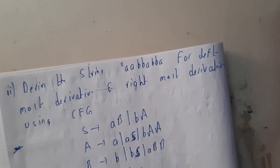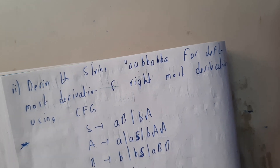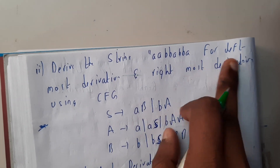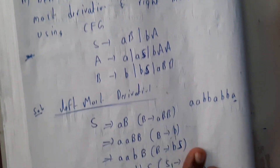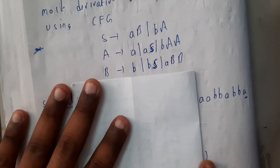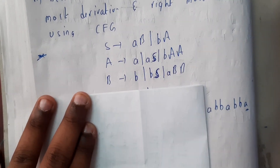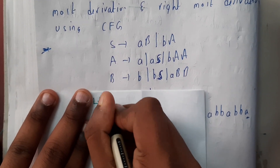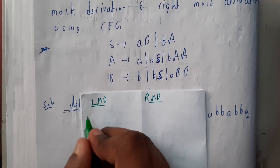Now let us continue to the next question, which is a bit bigger compared to the first, but the process is exactly the same. Derive the string 'aabbabba' from leftmost derivation and rightmost derivation using the given context-free grammar. Our goal is leftmost and rightmost derivation.